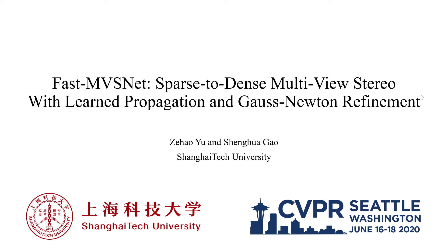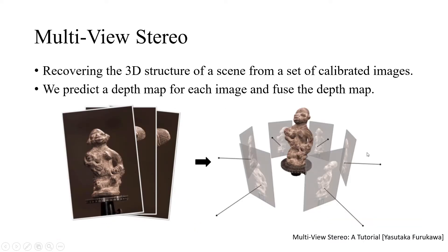We present FastMVSNet: sparse to dense multi-view stereo with learned propagation and Gauss-Newton refinement. We predict a depth map for each image and fuse the results into a point cloud.